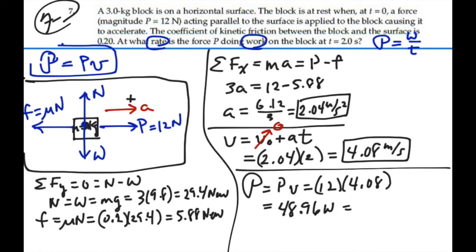So at this moment, at t equal to 2 seconds, the power that p is exerting on the block is 49 watts.